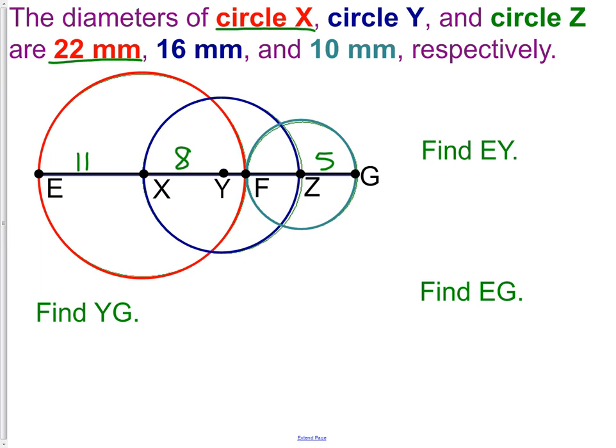We have most of the circle here as far as the measurements, but let's see if we can identify the pieces that we don't have. We know this distance from E to X, we know the distance from G to Z, and we know the distance from F to Z. We also know that the distance from X to Y is 8. What we don't know is this little piece right here from Y to F. So that's what we're going to try and figure out. Look at the picture and see if you can come up with a way that you can figure out that measurement.